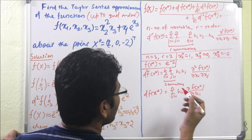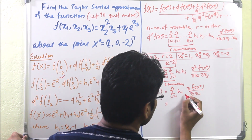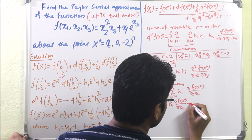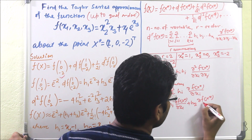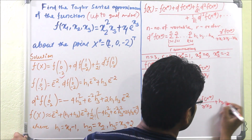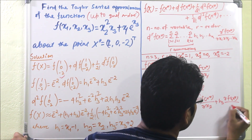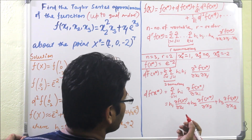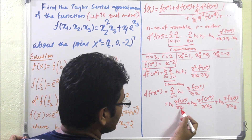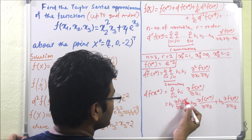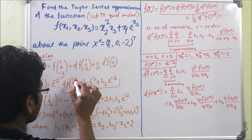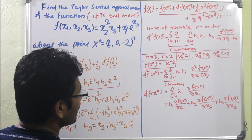If we find the partial derivatives ∂f/∂x1, ∂f/∂x2, and ∂f/∂x3 and then put in the x star values, we get df(1, 0, −2) equal to h1 · e^(−2) plus h3 · e^(−2).